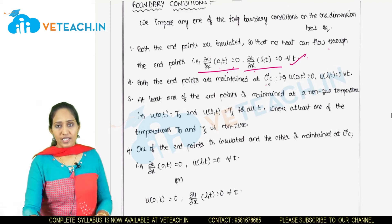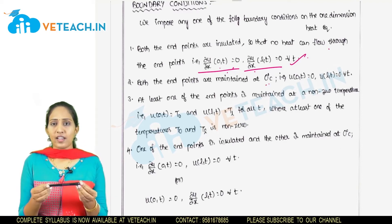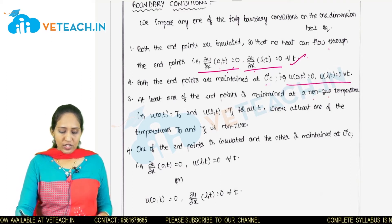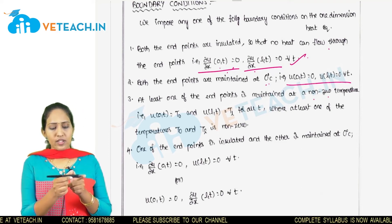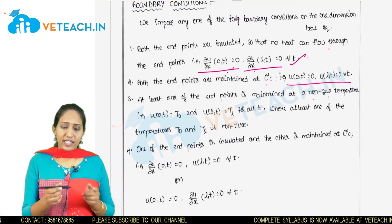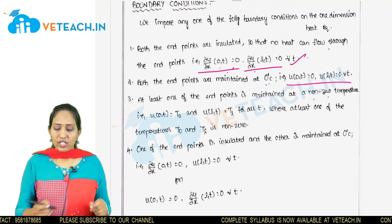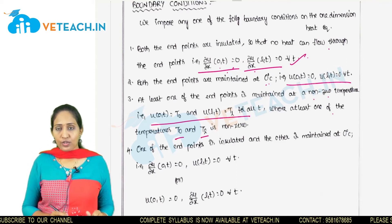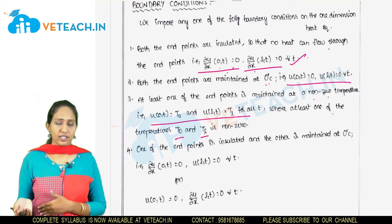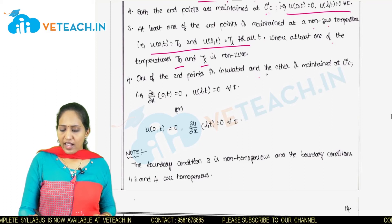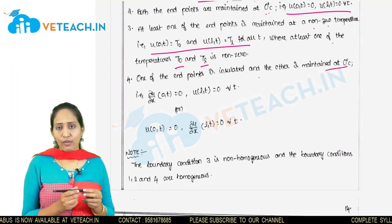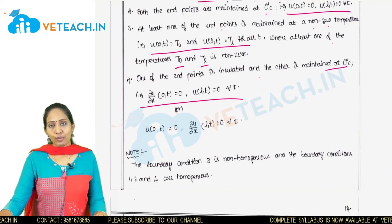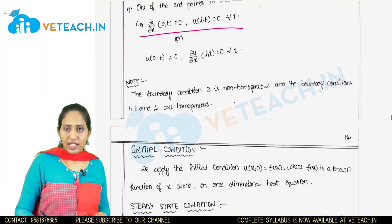Another case: both end points are maintained at 0 degrees centigrade, so the rod is kept at 0 degrees at both ends. A third case: at least one of the end points is maintained at a non-zero temperature, meaning T(0) or T(L) is non-zero. One of those conditions requires non-zero temperature at an endpoint.